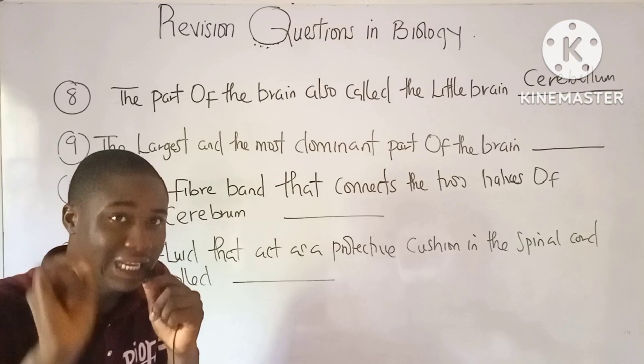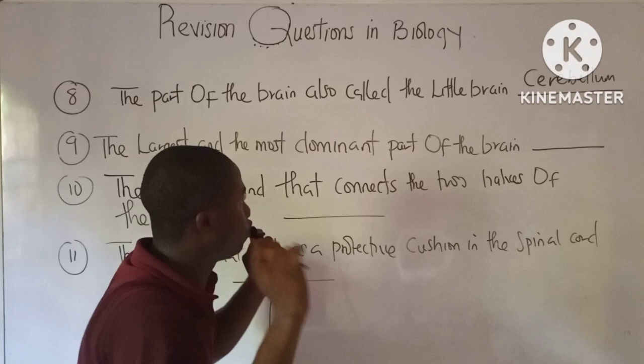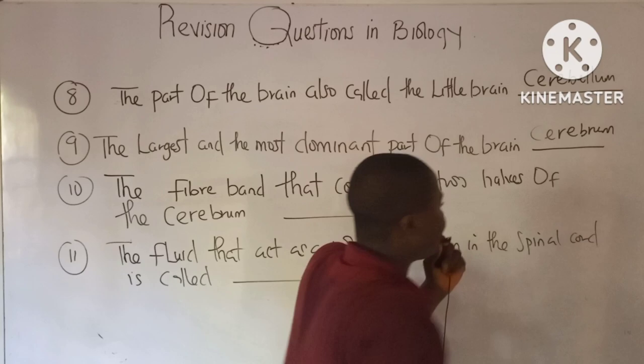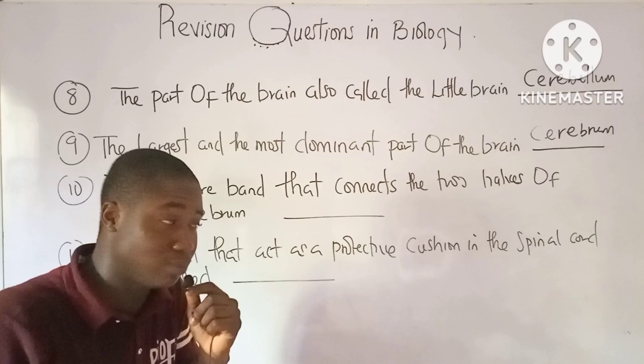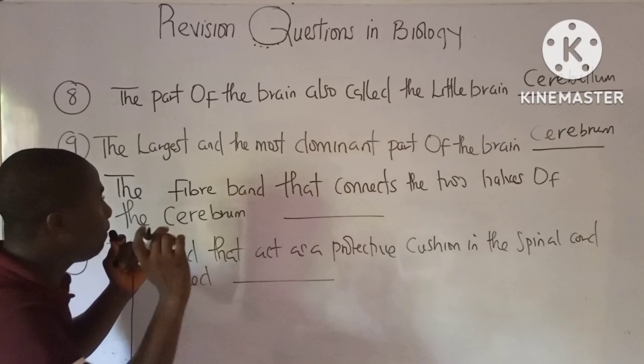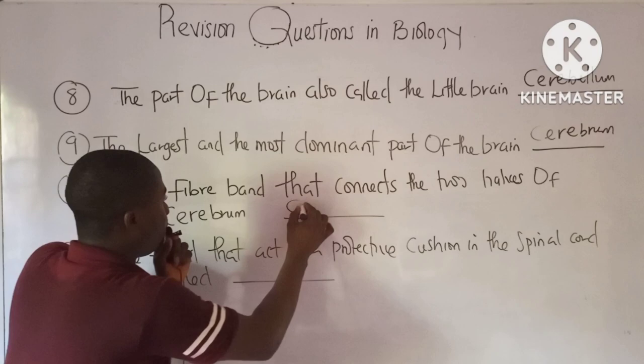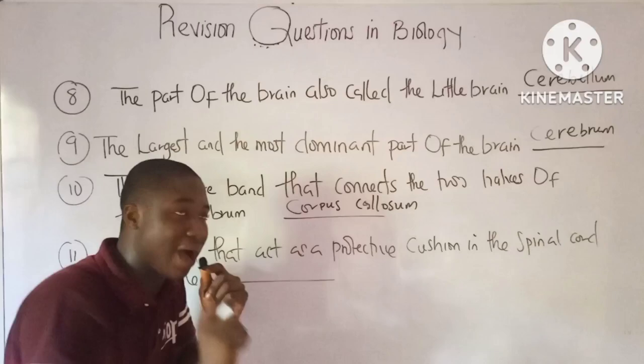Question 9: The largest and most dominant part of the brain is the cerebrum. It controls intelligence, consciousness, and judgment. Question 10: The fiber band that connects the two halves of the cerebrum is called the corpus callosum.